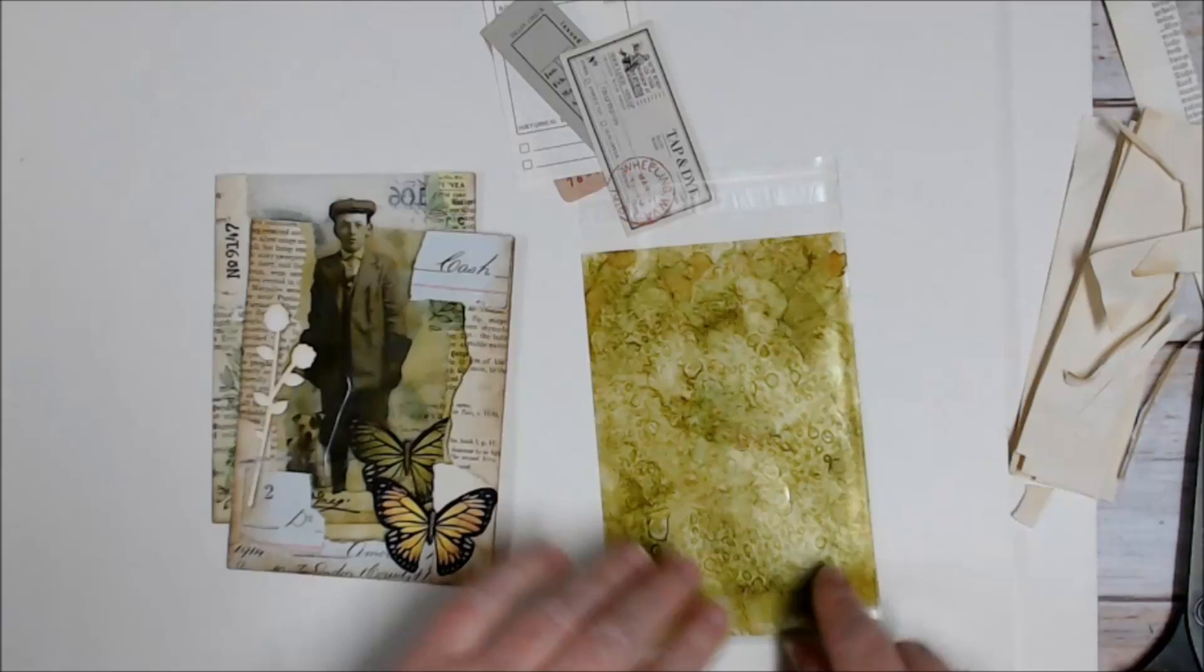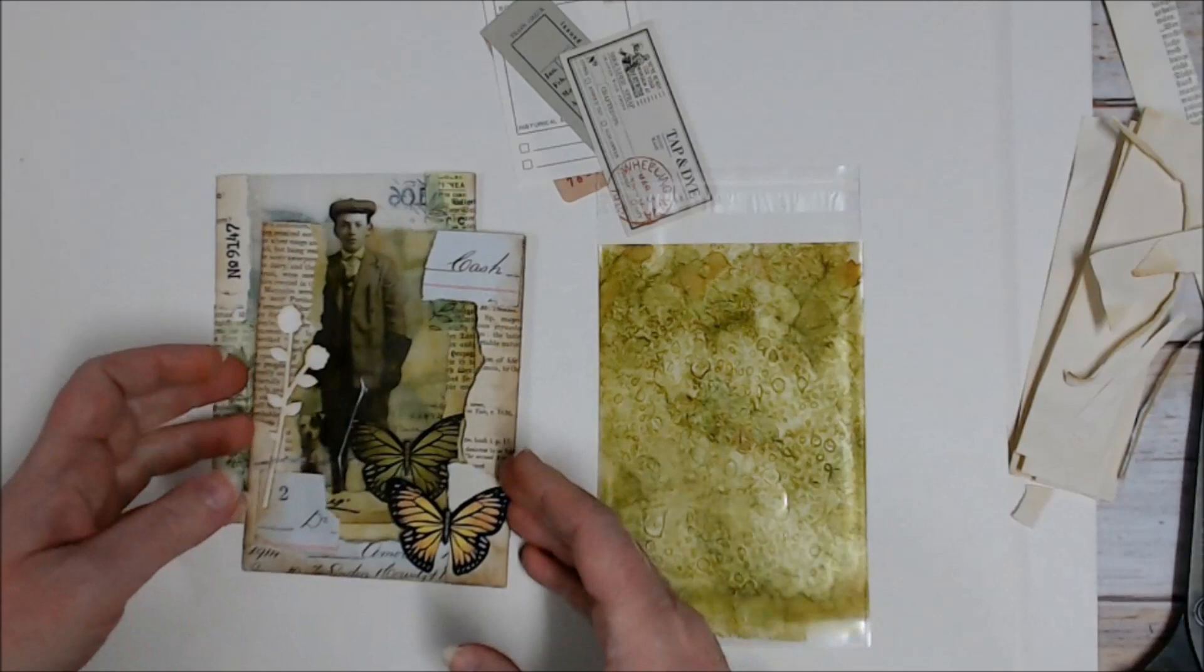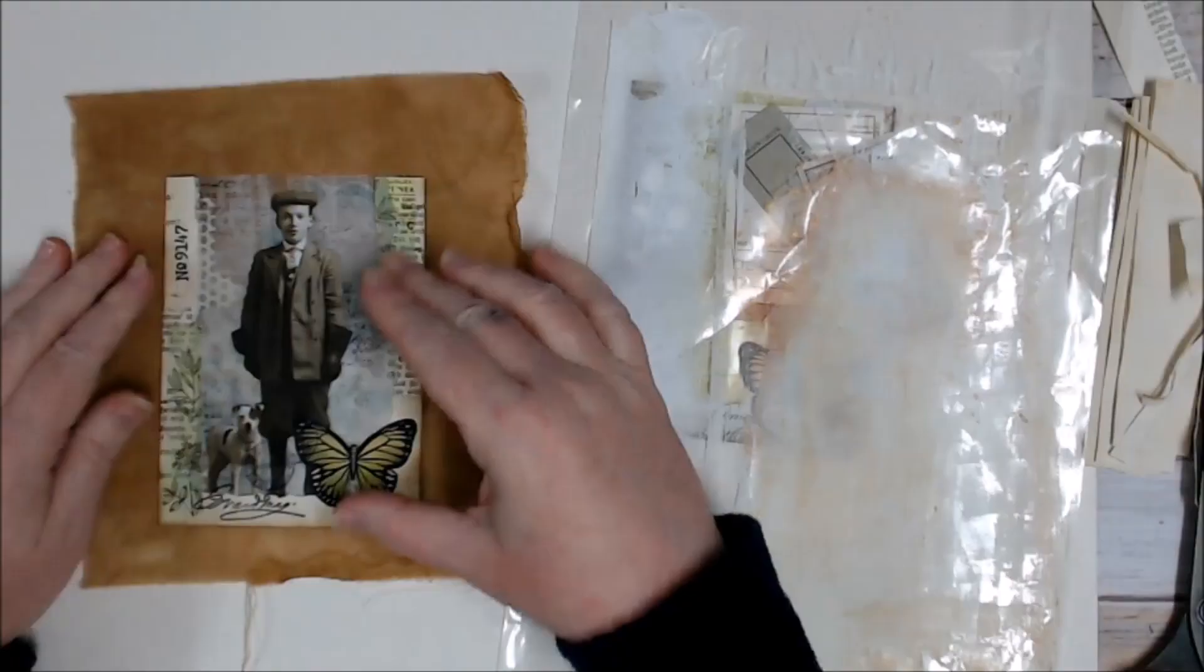Once it was dry and you've got to make sure it is completely dry, then I've just gone ahead and done the same technique by putting the book page around the edges. And that's given me this sort of mottled look on the inside of the bag.